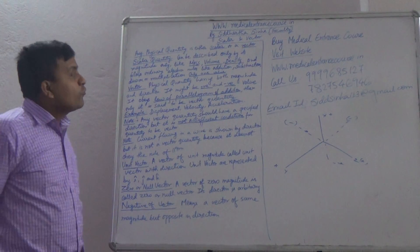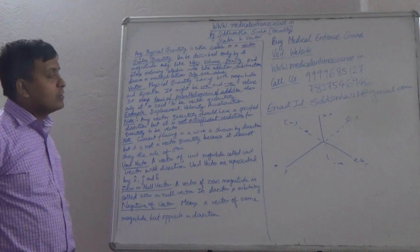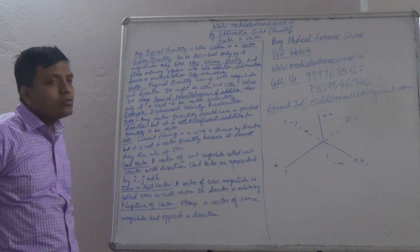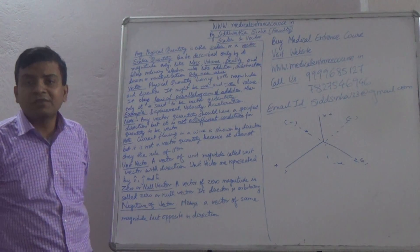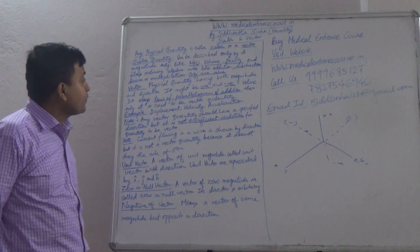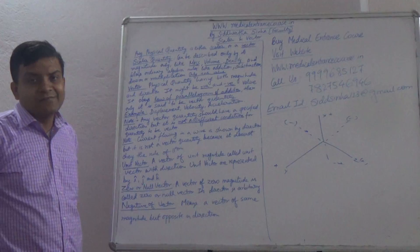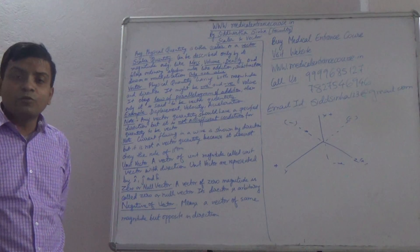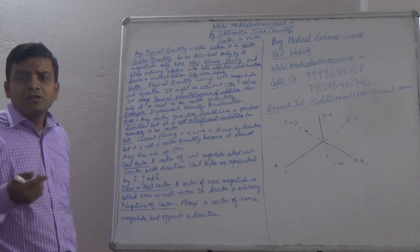Only magnitude. For example, mass, volume, density are examples of this. And it follows the basic algebraic rules like addition, subtraction, division, and multiplication. It consists of only positive value. There is nothing called negative value because magnitude is always positive. Magnitude means it is always positive.